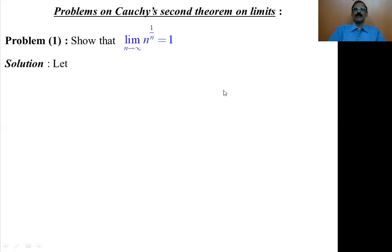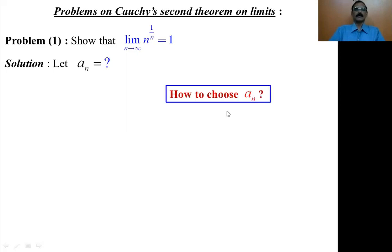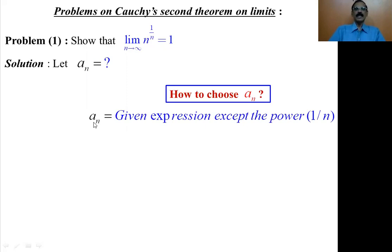First of all, we have to write a_n, the nth term of the given sequence. Whether it is Cauchy's first theorem on limits or Cauchy's second theorem on limits, the very first step is to write a_n. The idea to choose a_n is: a_n is the given expression except the power 1 by n.